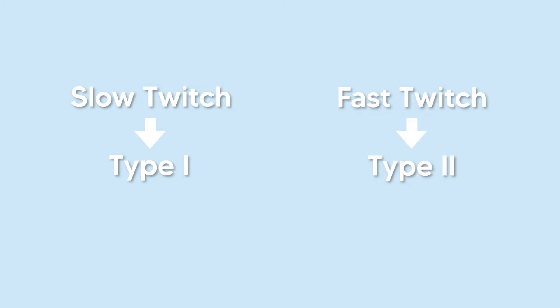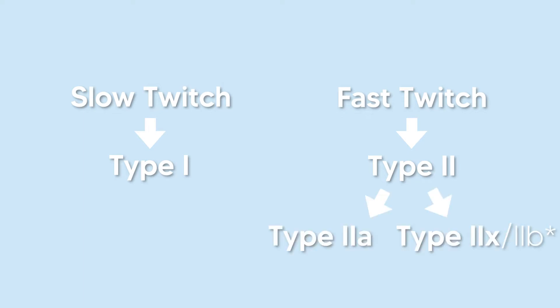Type 2 fibers are then subdivided into Type 2a and Type 2x. You may see Type 2x fibers labeled as Type 2b, however this is an old way of doing things. Recent research shows that only animals have Type 2b fibers, so to be most accurate, we should be calling them Type 2x.